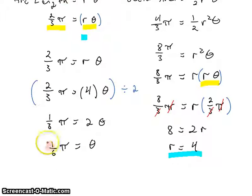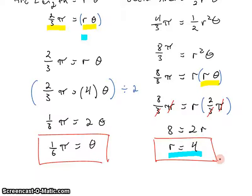And from that, we get our results. Theta is 1 sixth of pi. And R is 4.